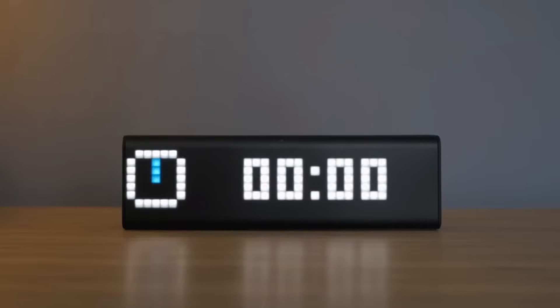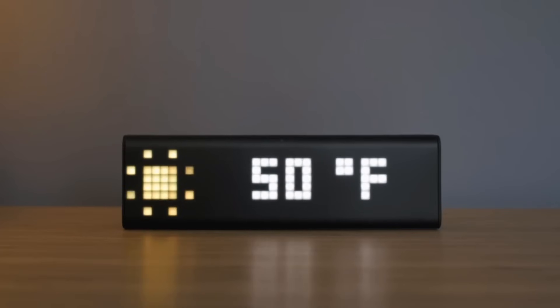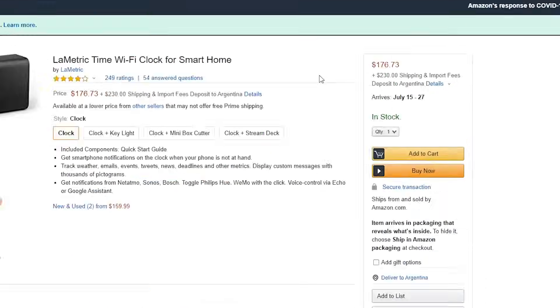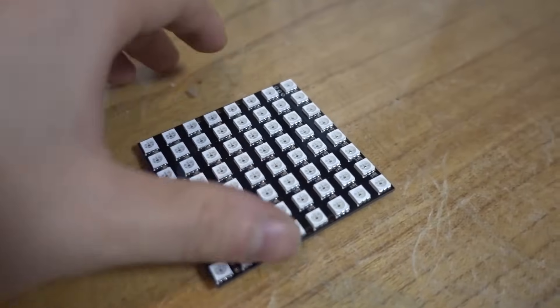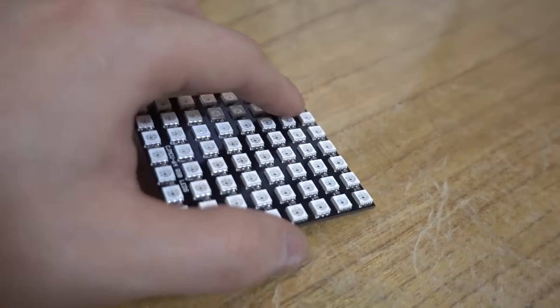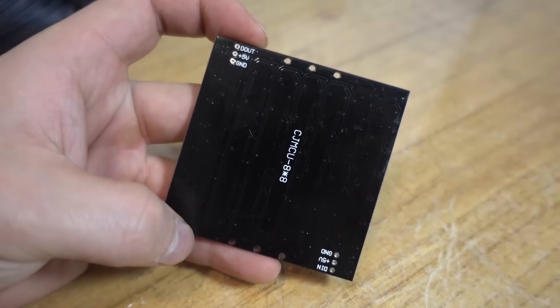The other day I saw that a YouTuber I watch had a really cool clock, the metric clock. I looked it up to see how much it cost, and I was surprised to find out it was almost $400. With taxes included here in Argentina, I said, hey, I can do this for a lot less money.